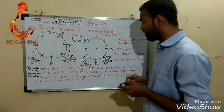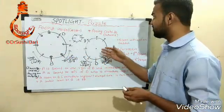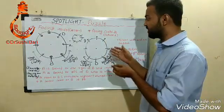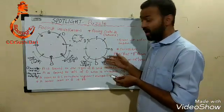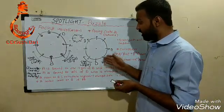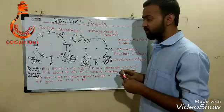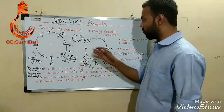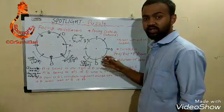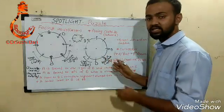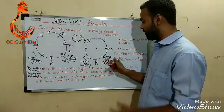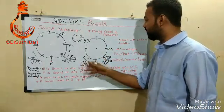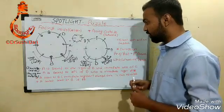The next concept is facing outside, where persons sit in circular arrangement facing outside the circle. This is vice versa — the directions are opposite. When facing outside, anti-clockwise is the left and clockwise is the right.